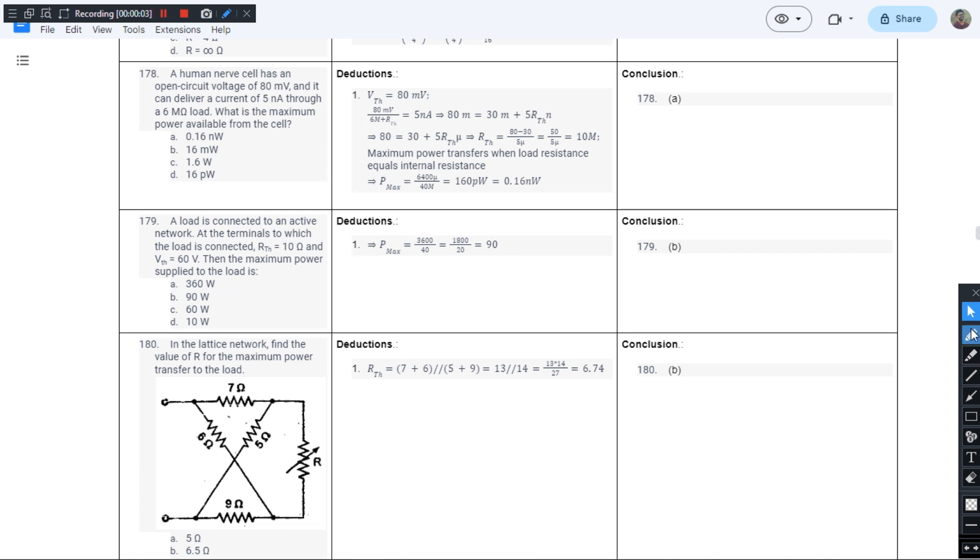This is question number 178 from chapter 1 of J.B. Gupta's book. A human nerve cell has an open circuit voltage of 80 millivolts and it can deliver a current of 5 nanoamperes through a load resistance of 6 megaohms.